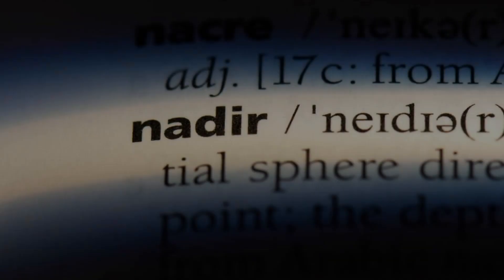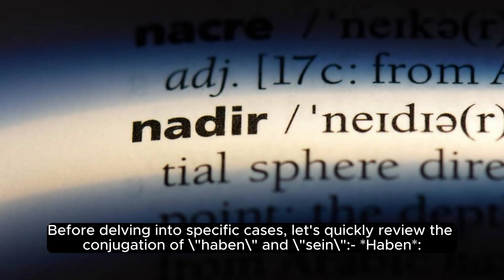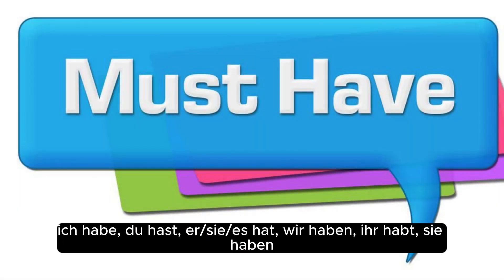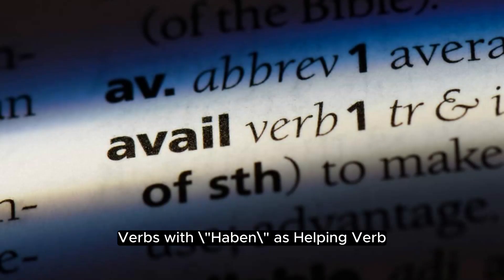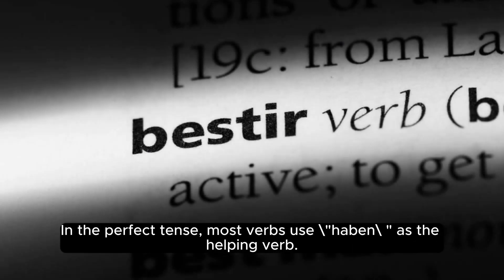Conjugation of Haben and Sein. Before delving into specific cases, let's quickly review the conjugation of Haben and Sein. Haben: ich habe, du hast, er/sie/es hat, wir haben, ihr habt, sie haben. Sein: ich bin, du bist, er/sie/es ist, wir sind, ihr seid, sie sind.